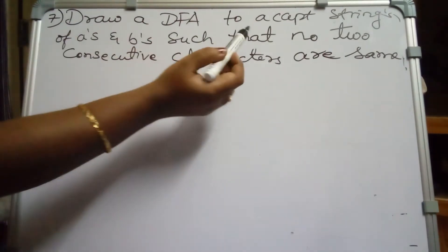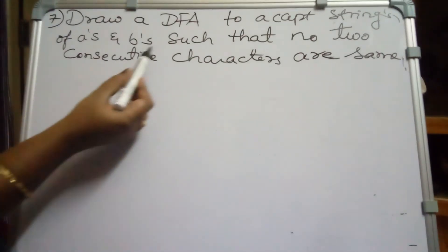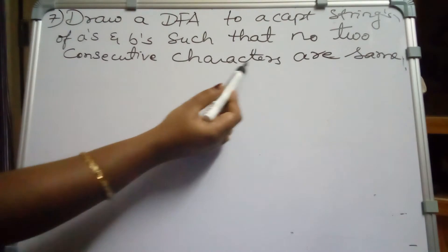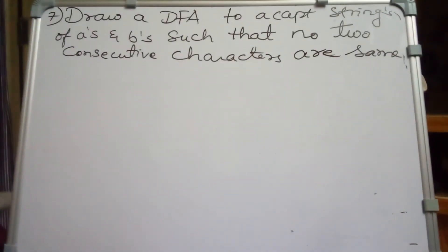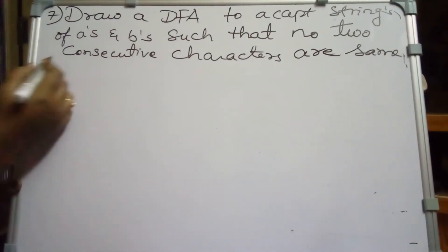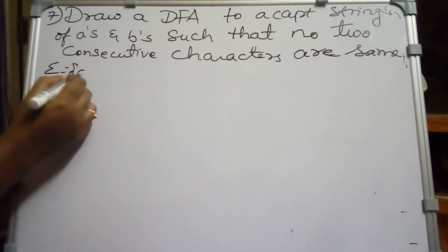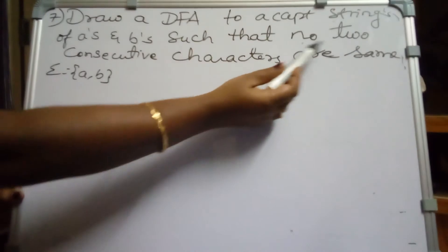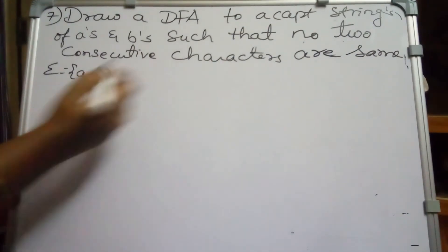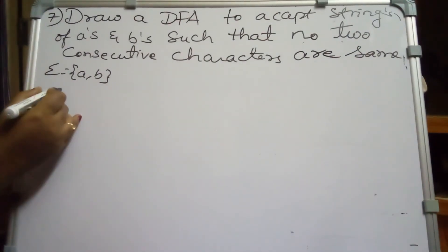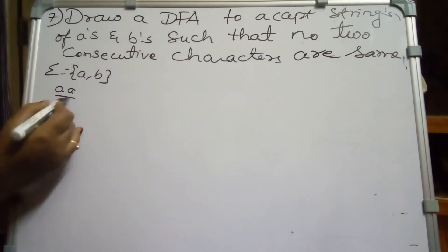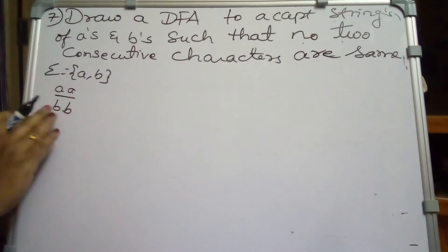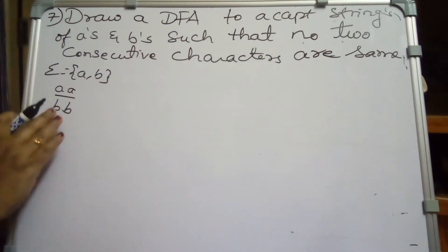Draw a DFA to accept strings of A's and B's such that no two consecutive characters are the same. The alphabet is A and B, and the condition is that no two consecutive characters are the same — meaning we should not have two A's together or two B's together.